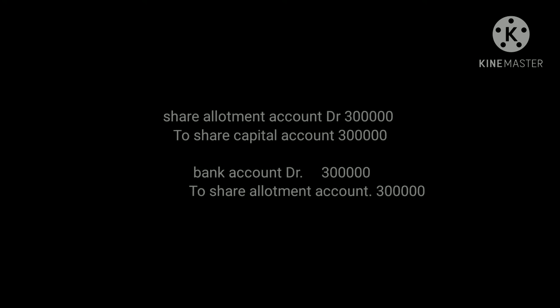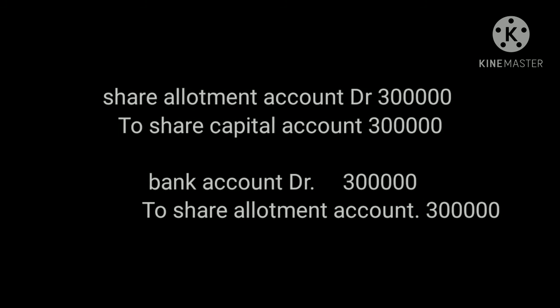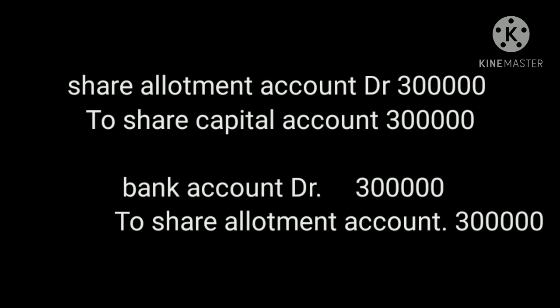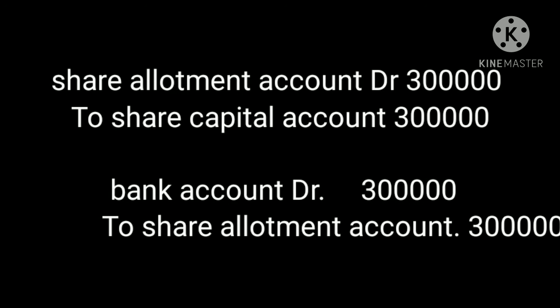The second step is allotment of shares — issuing shares to applicants in response to their application. Journal entry when allotment is due: Share Allotment Account Dr to Share Capital Account. Applicants applied for 10,000 shares, and the company allotted 10,000 shares at rupees 30. So 10,000 into 30 equals 3 lakh. Journal entry: Share Allotment Account Dr 3 lakh to Share Capital Account. On allotment money received: Bank Account Dr to Share Allotment Account, same amount 3 lakh.